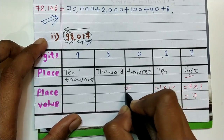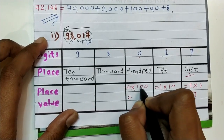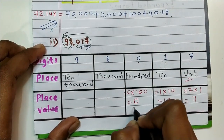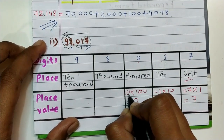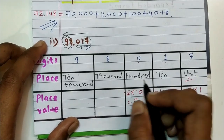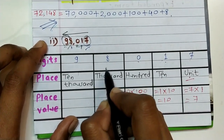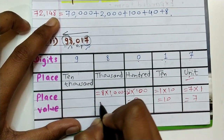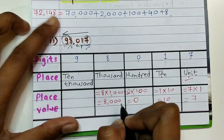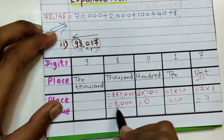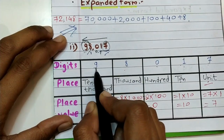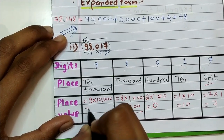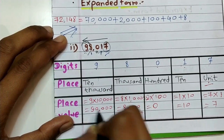Place value of zero equals zero into one hundred — when we multiply zero by any number the answer is always zero. So zero at any place, whether hundreds, thousands, or lakhs, its value is always zero. Place value of eight equals eight into one thousand, which is equal to eight thousand. Place value of nine equals nine into ten thousand, which is equal to ninety thousand.